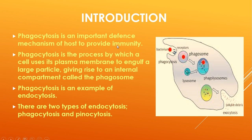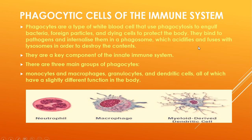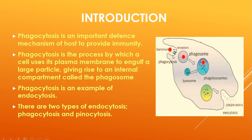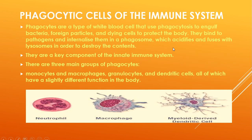Phagocytes are the type of white blood cells that use phagocytosis to engulf bacteria, foreign particles, and dying cells to protect the body. They bind to the pathogen and internalize them in the form of a phagosome. Whether it is a bacterium or a dead cell, they take it in the form of a phagosome, which acidifies and fuses with the lysosome in order to destroy the contents.